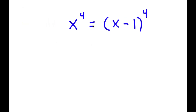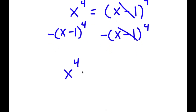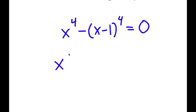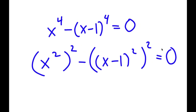In this problem, I have x to the power of 4 is equal to x minus 1 to the power of 4. To solve this, I'll start by subtracting x minus 1 to the power of 4 on both sides. These cancel out, and now I have x to the power of 4 minus x minus 1 to the power of 4 is equal to 0.